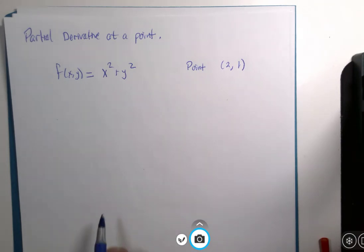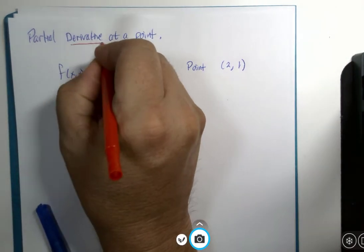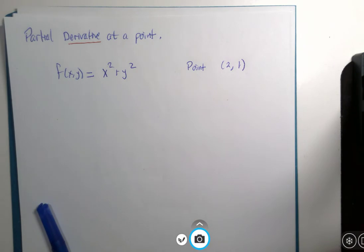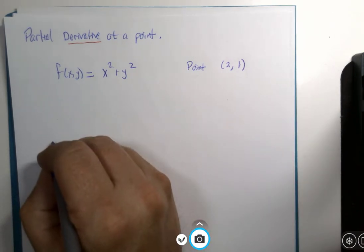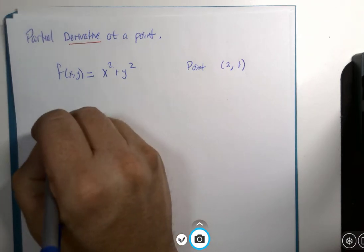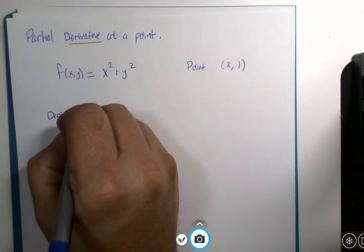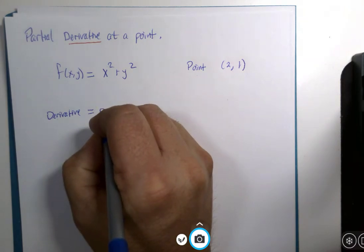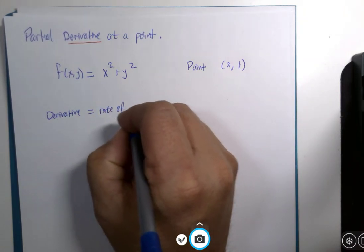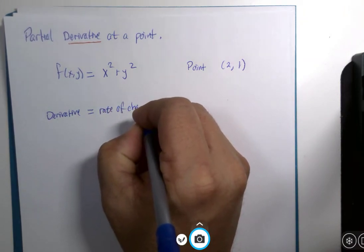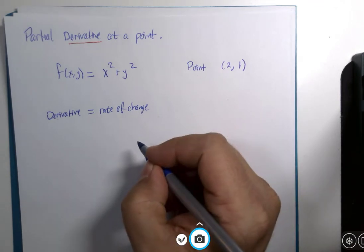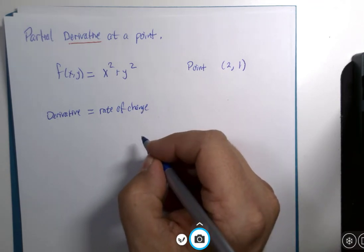First thing we're going to do is just remind ourselves that when we calculated a derivative in first year calculus, we were treating the derivative as some form of rate of change. And instantaneous rate of change it was.